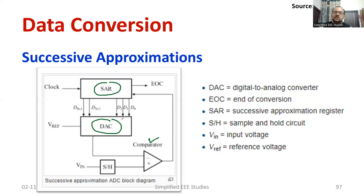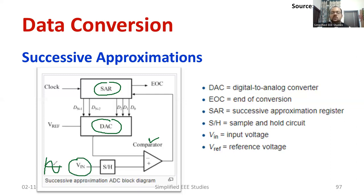Our ultimate target is to convert VIN — which is in analog form, just like an analog waveform — into digital form, meaning a sequence of 1s and 0s. That is our target. The analog input is given to the sample and hold circuit, and we can observe that this is the non-inverting terminal of the operational amplifier.